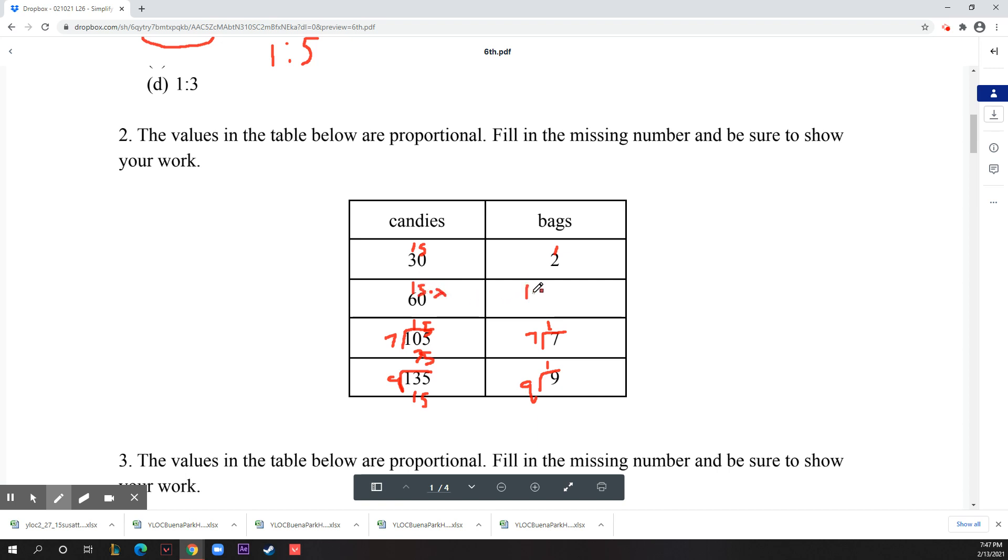Now you know that the ratio is 15 to 1, so 15 times x is equal to 60, and 1 times x is equal to whatever this is - let's just call it y. 15 times x would be - x would be 4 because 15 times 4 is 60, which means that 1 times 4 equals 4, so y is equal to 4, or our missing number is 4.